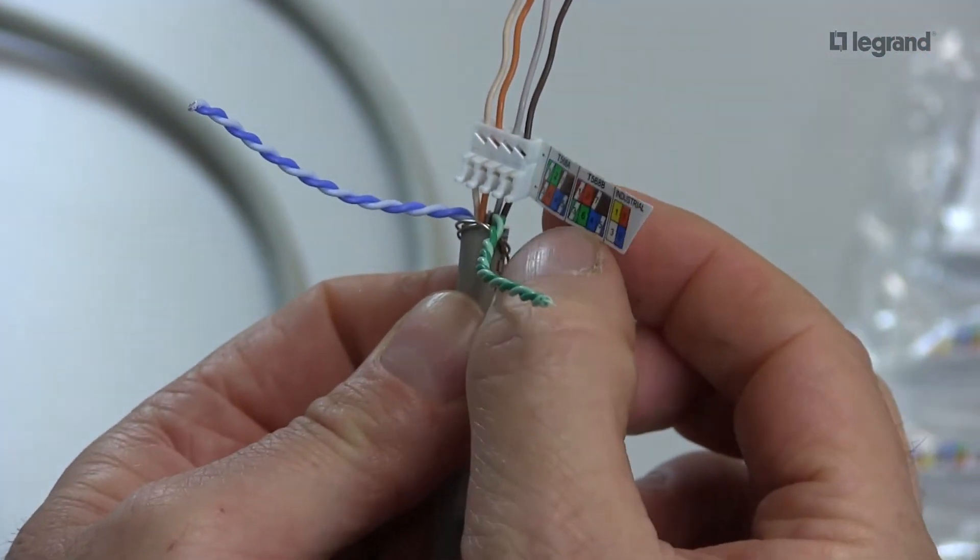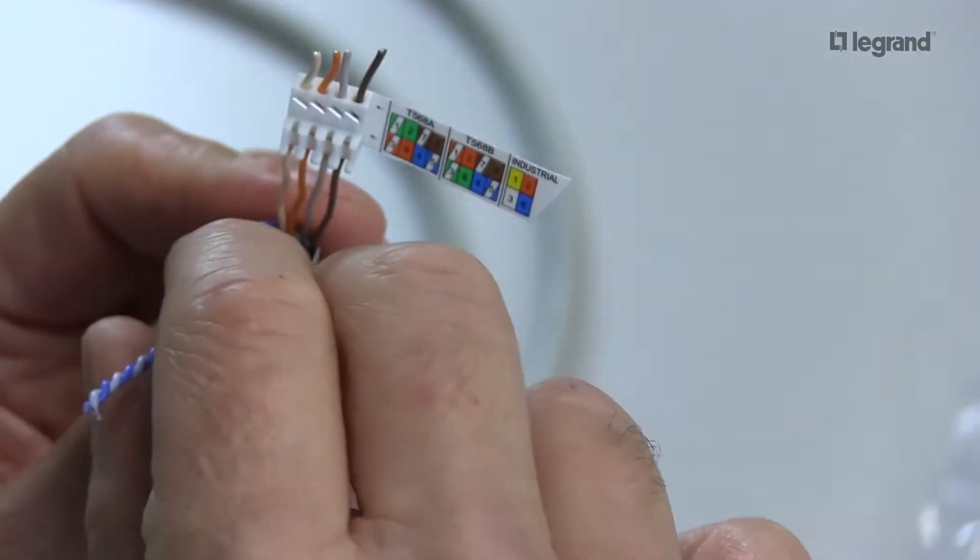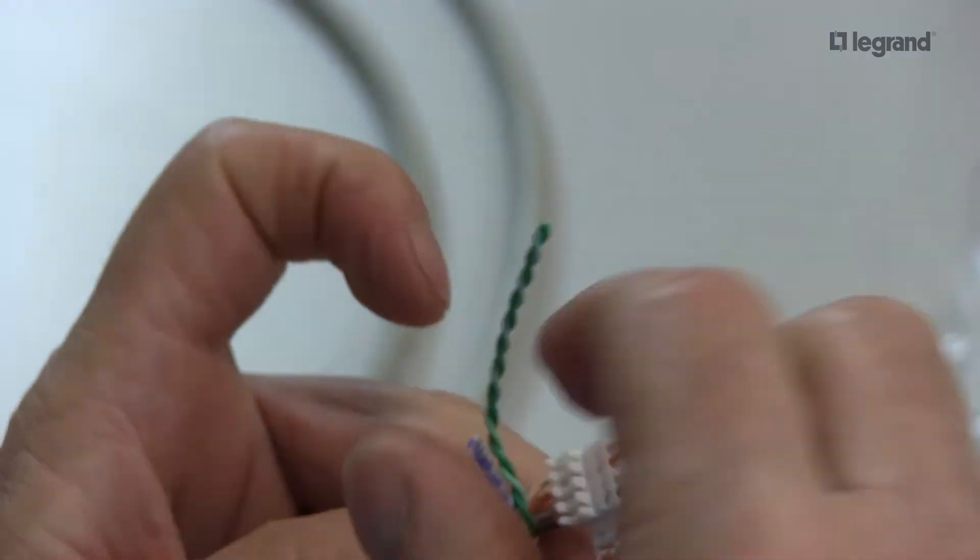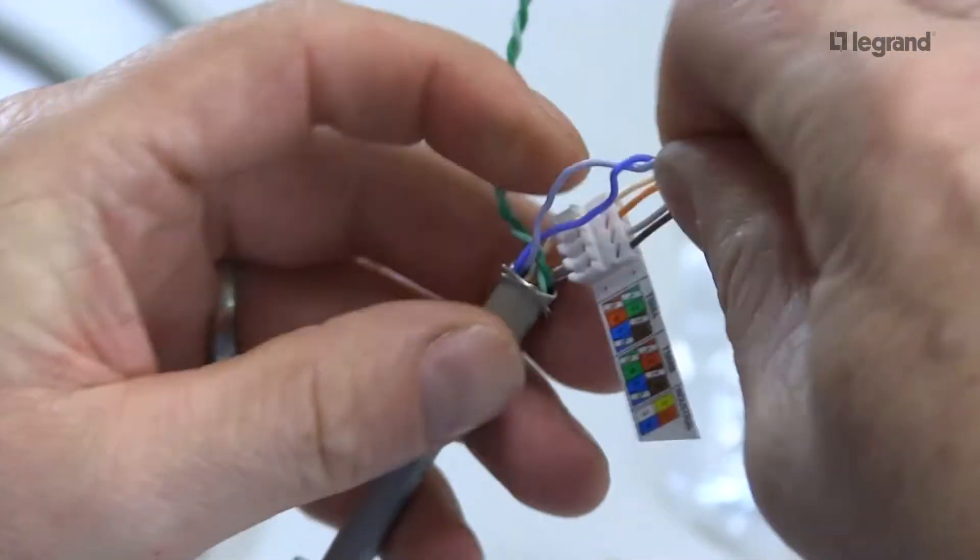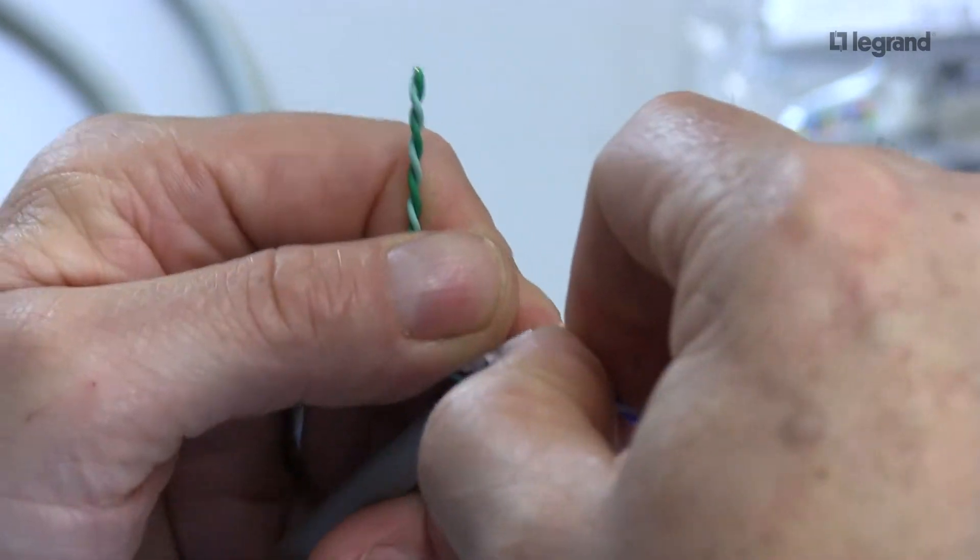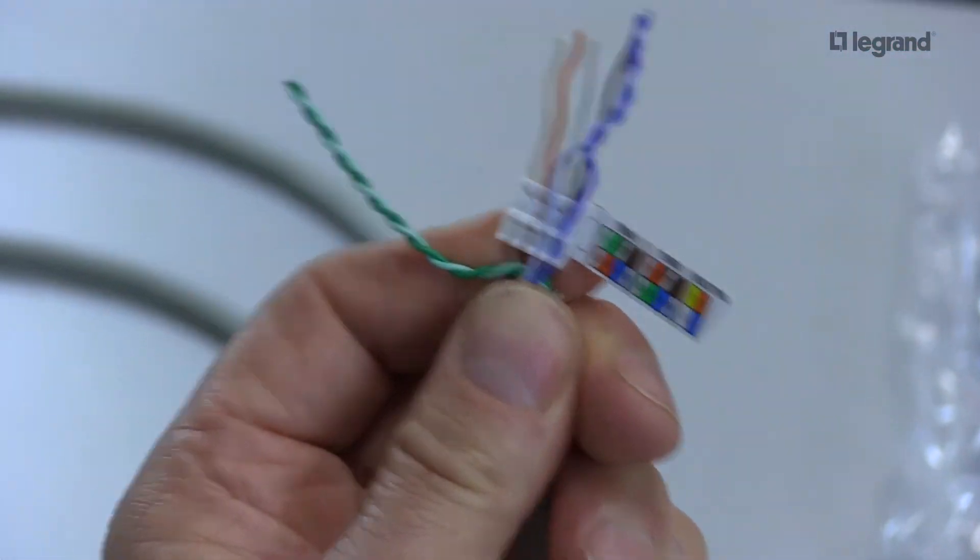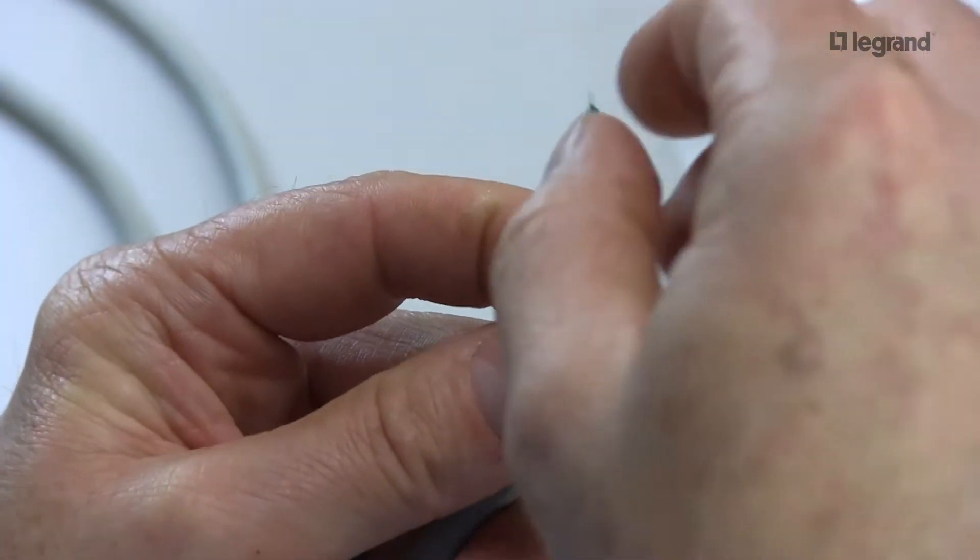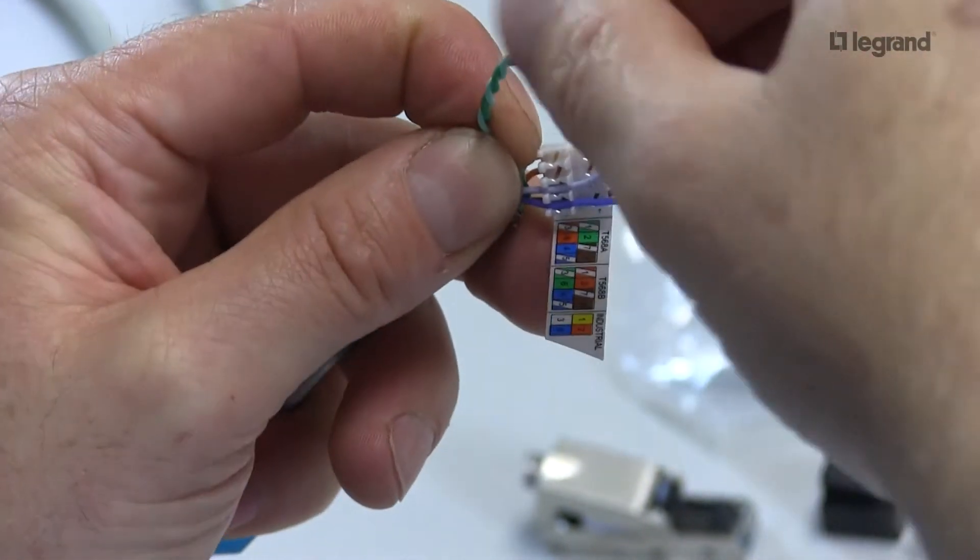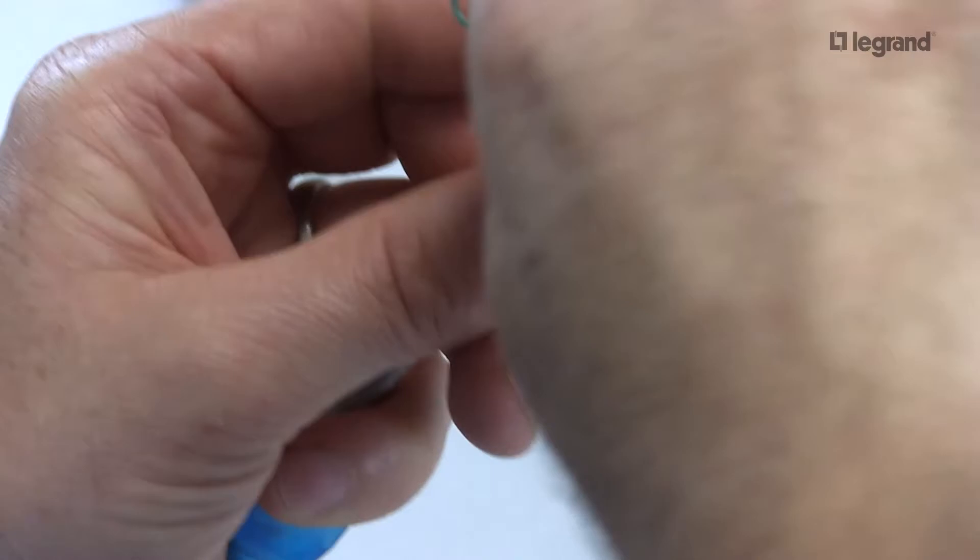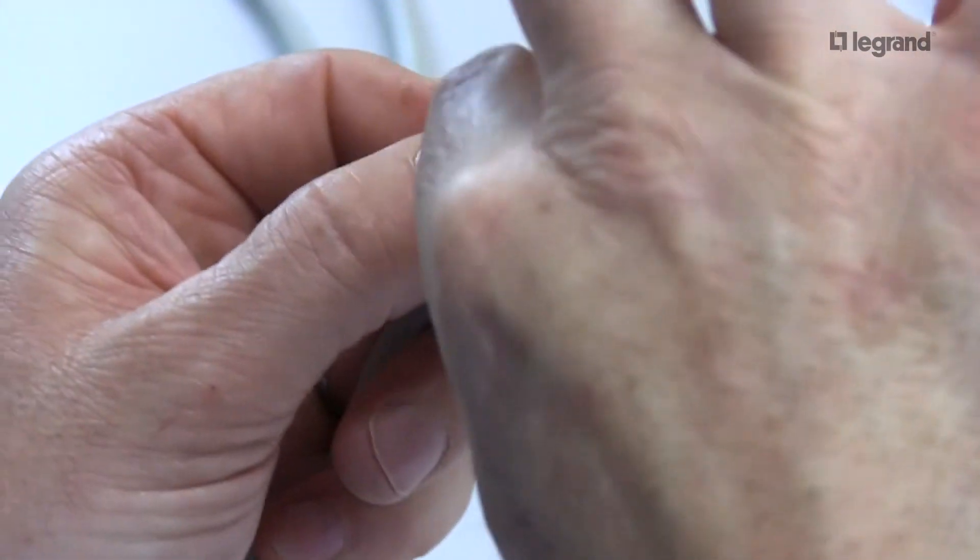Now, of course, I'm going to separate my orange—I'm sorry, my green and my blue. Bring that back down. Separate my pairs. Bring that back down. There are little grooves inside this lacing cap. Place your conductors.